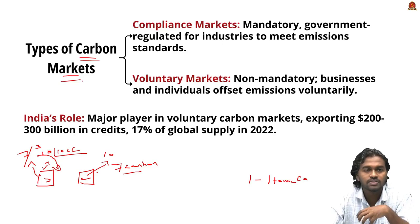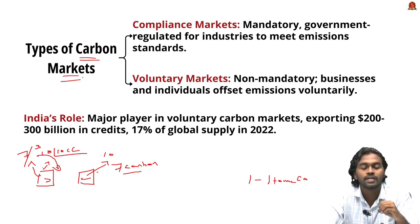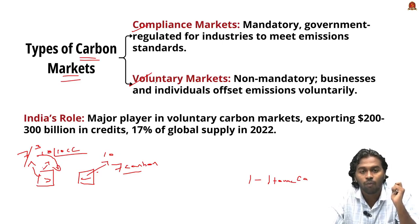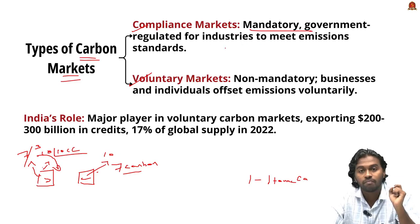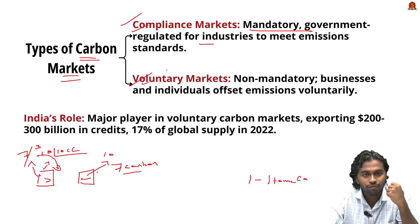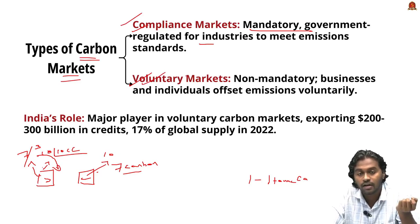Carbon markets are platforms where companies or entities can purchase and sell carbon credits. There are two types of carbon markets: compliance markets and voluntary markets. Compliance markets are regulated by the government — industries must limit their emissions and purchase carbon credits if they exceed the limit. In voluntary markets, companies are free to purchase and sell carbon credits based on their voluntary interest.